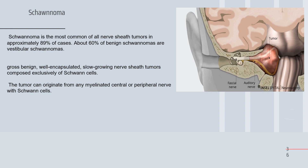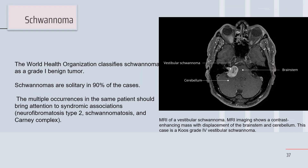Schwannoma can originate from any myelinated peripheral nerve. By WHO classification, it is grade one — a benign tumor. Schwannomas are solitary in 90 percent of all cases. Multiple occurrences in the same patient should bring attention to syndromes associated with neurofibromatosis, and schwannomas may be found on the same nerve or elsewhere.